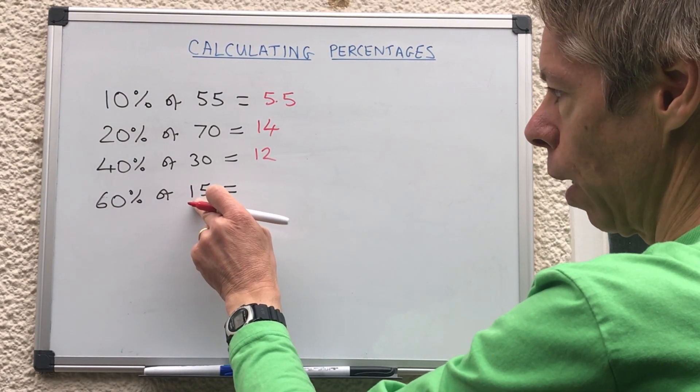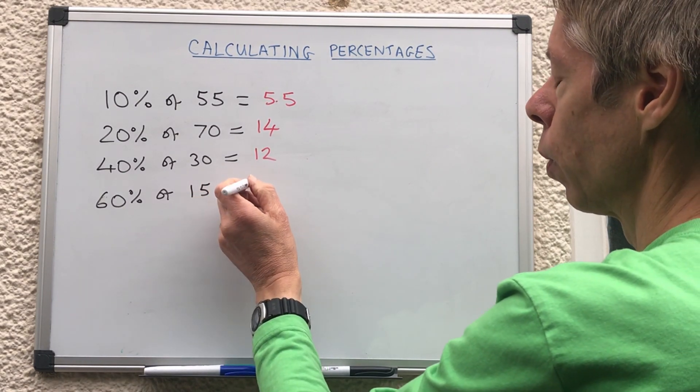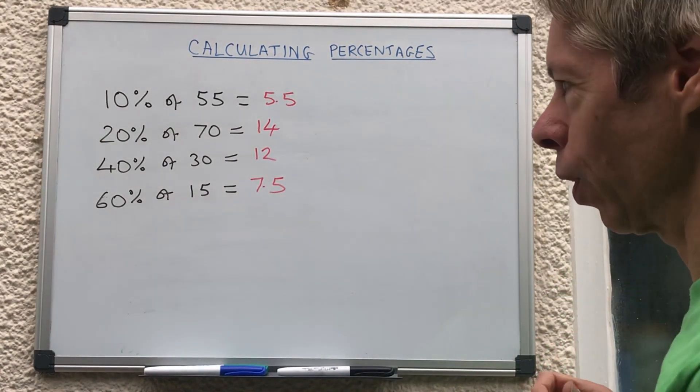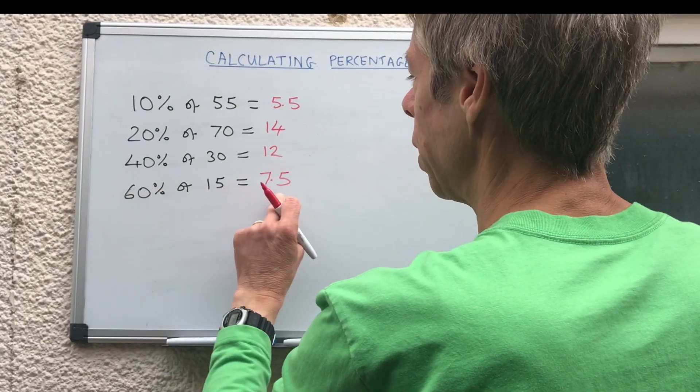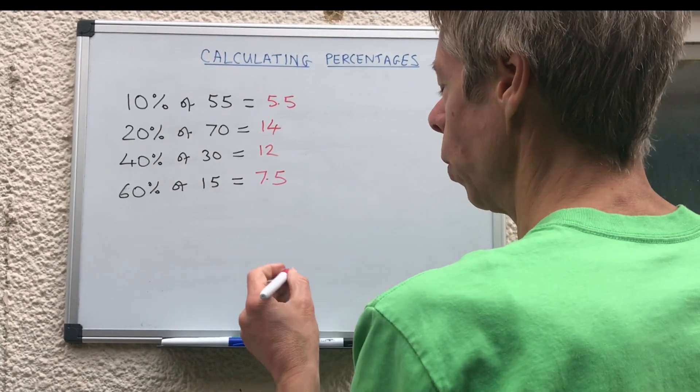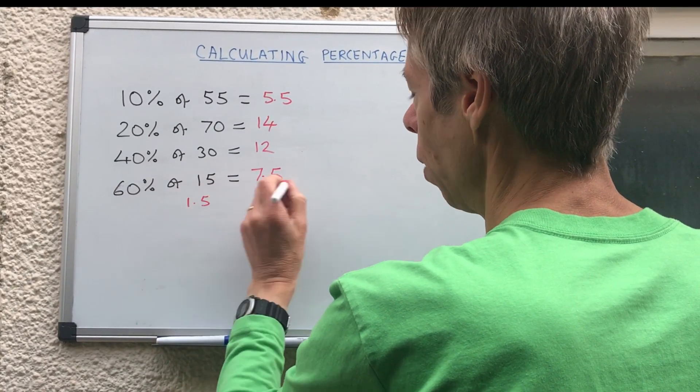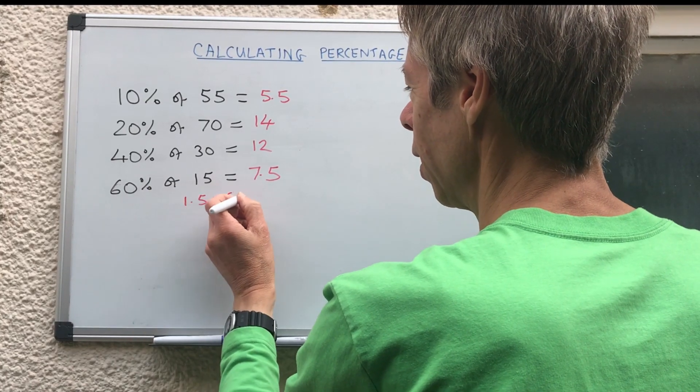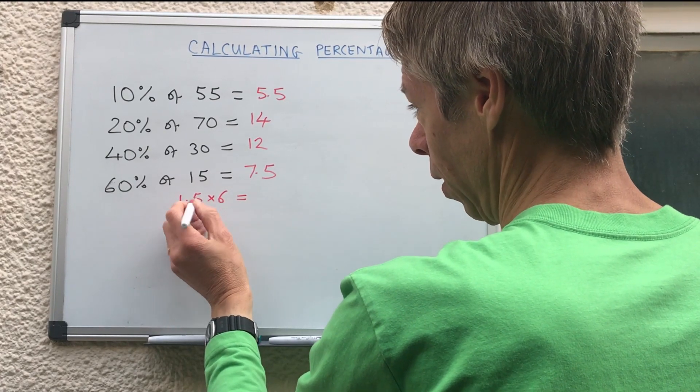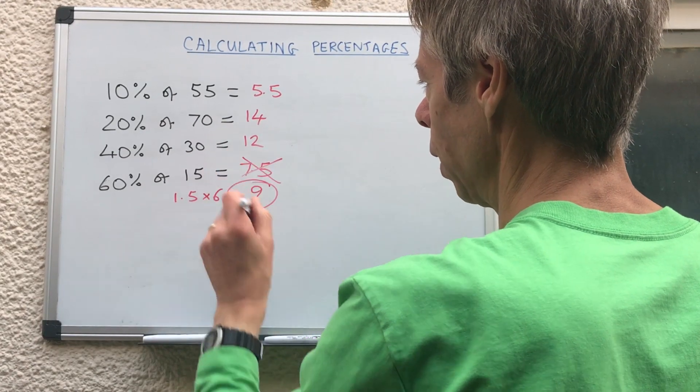60% of 15, divided by 10 is 1.5, now you got 1.5 there, times that by 6 will give you 7.5. Wait, it can't be 7.5 because that is 50%, always check your answers. So what did I do wrong there? I should have times it by 6. So 1.5, 6 times 1 is 6, 6 times 0.5 is 3, so that would give us 9. So the correct answer there is 9.